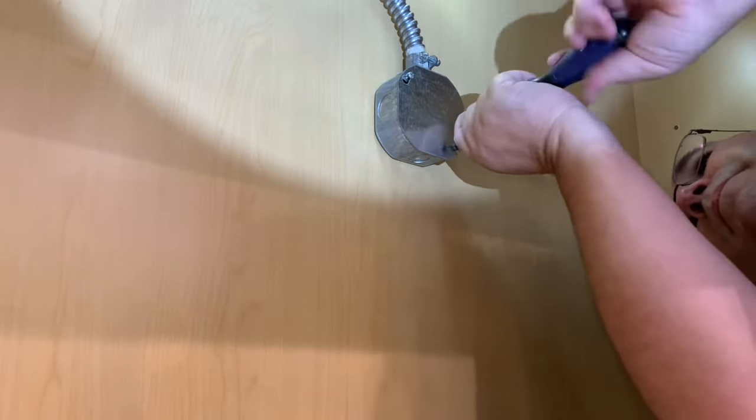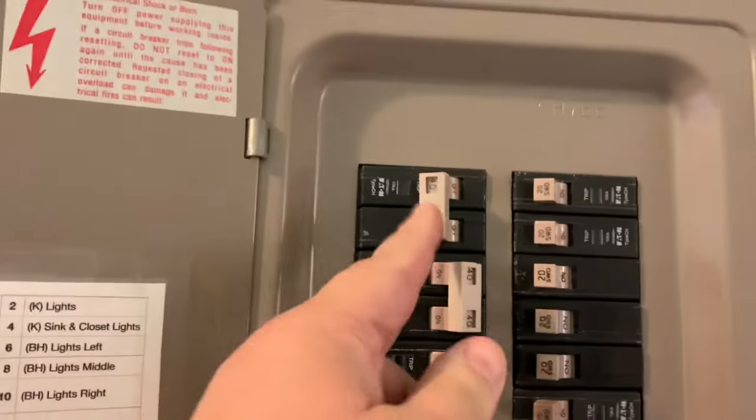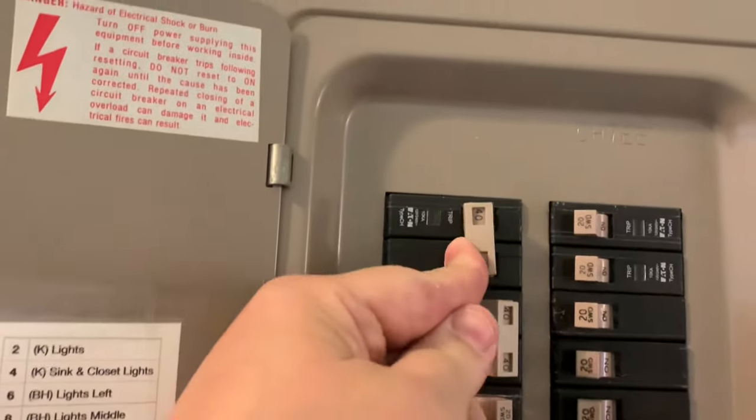Once the cover is secured, we're going to go back to the circuit breaker box and turn the power back on and then test it out at the cooktop to make sure everything works.